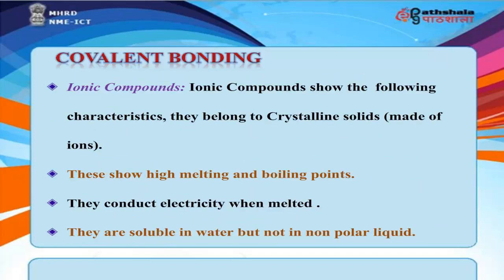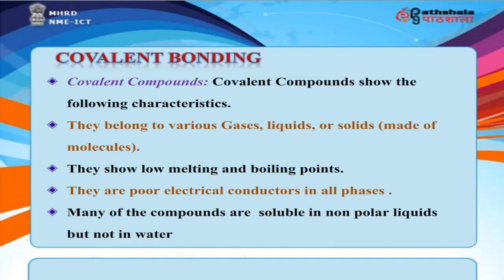Ionic compounds are crystalline solids made of ions that show high melting and boiling points, conduct electricity when melted, and are soluble in water but not in non-polar liquids. Covalent compounds can be various gases, liquids, or solids made of molecules. They show low melting and boiling points, are poor electrical conductors in all phases, and many are soluble in non-polar liquids but not in water.